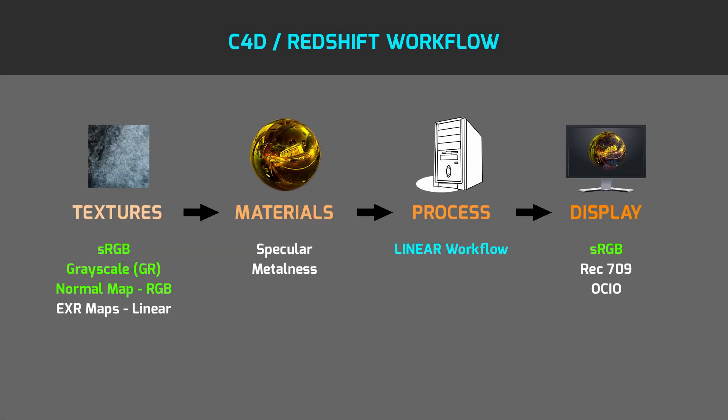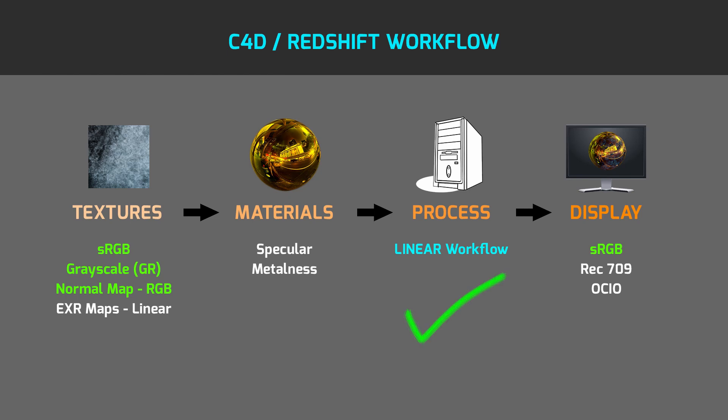As you can see in our main scheme, the first step is to correctly set up textures for Redshift, and the second step is to understand where to connect these textures in the corresponding material workflow. As the next step, Redshift is ready to process all geometry, textures, materials, HDRI maps, and lights together.